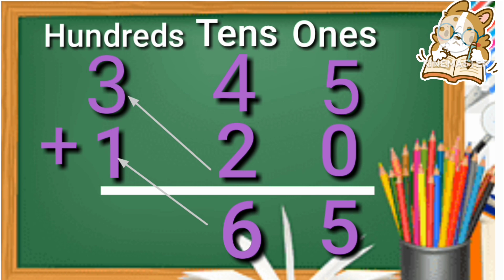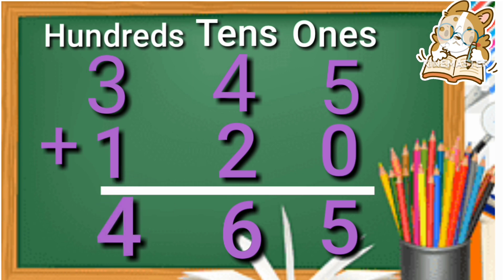Then last we add the hundreds: three plus one is equal to four. So three hundred forty-five plus one hundred twenty, the answer will be four hundred sixty-five.